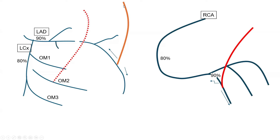For example, if a patent LIMA to LAD fills antegradely to the apex and retrogradely to the mid LAD, filling some diagonals and septals, but not all the way back to the ostial LAD, and you have severe left main or proximal LAD disease before a big diagonal and septal, there is ischemia in those branches and you may need to stent the native LAD or left main. Similarly, if a graft to OM2 is patent but that OM2 is disconnected from the native circumflex, the graft is not feeding OM1 or OM3, and a severe native circumflex stenosis may need to be addressed.